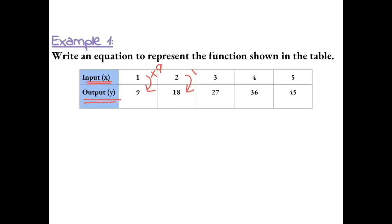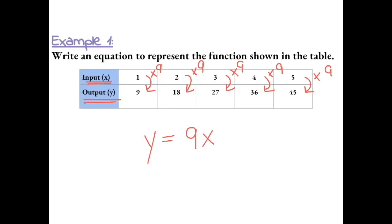2 times 9 does give us 18. 3 times 9 gives us 27. 4 times 9 gives us 36. And 5 times 9 gives us 45. So we can always find our output value, which would always represent y. Our output is always going to be equal to 9 times any input value, which we can represent as x. So the equation for this function is y equals 9x.